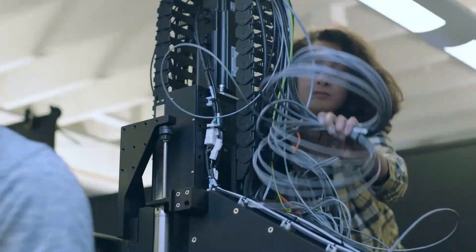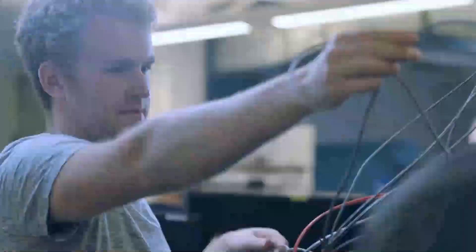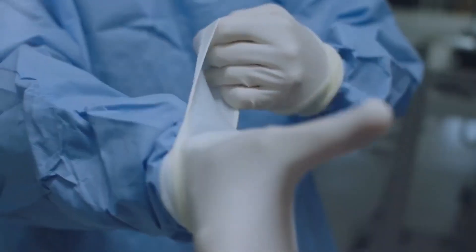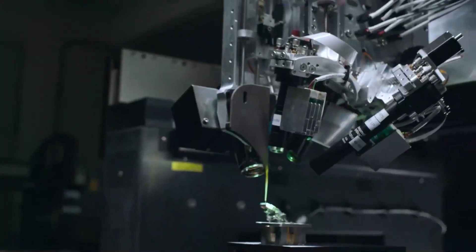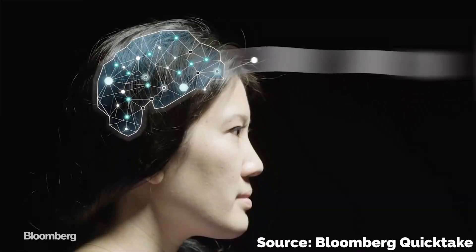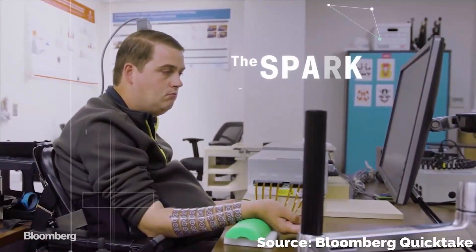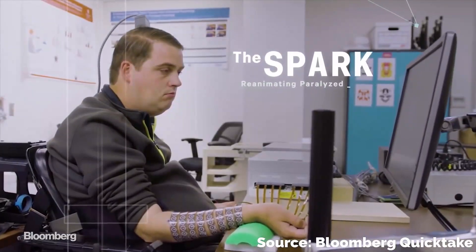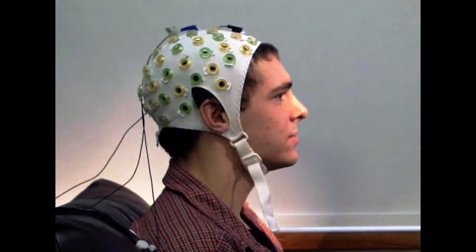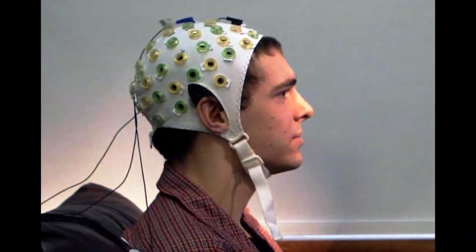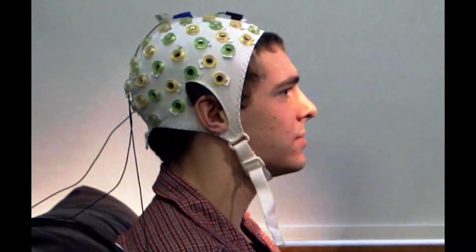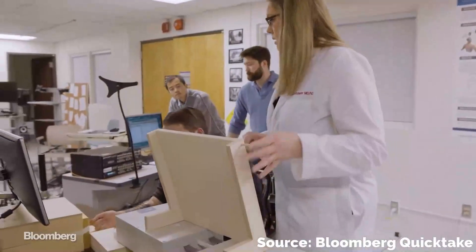Neuralink is designing a chip the size of one cent that would be implanted in a person's skull. A network of tiny wires, each about 20 times thinner than a human hair, spread across from the chip and into a person's brain. The wires are fitted with 1024 electrodes that can monitor brain activity as well as electrically stimulate the brain in theory. This information is wirelessly transmitted to computers where it can be analyzed by researchers.